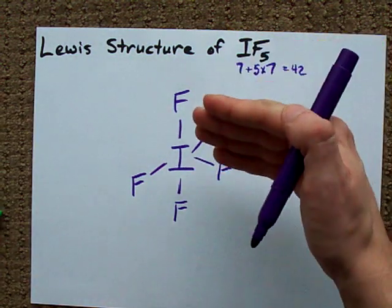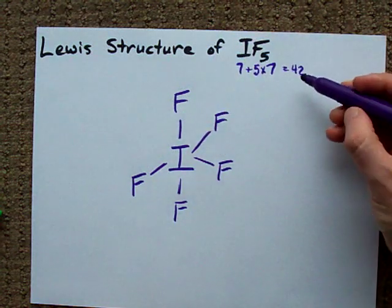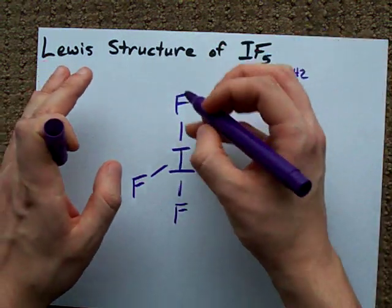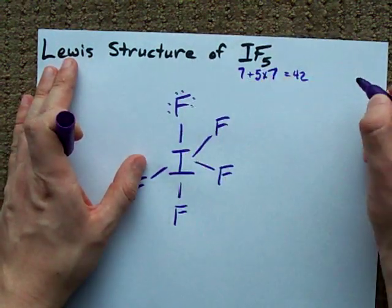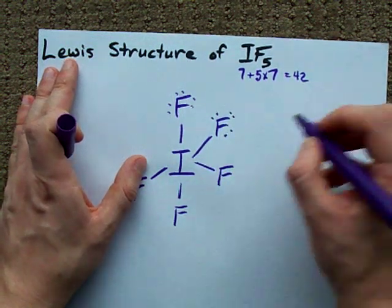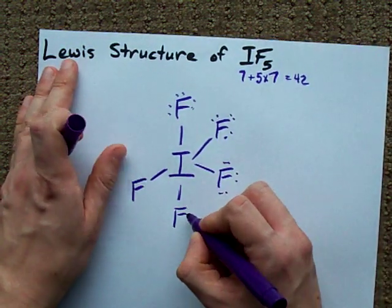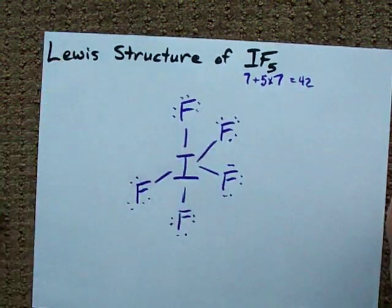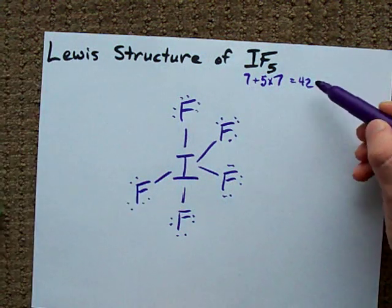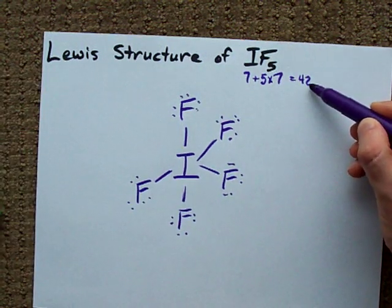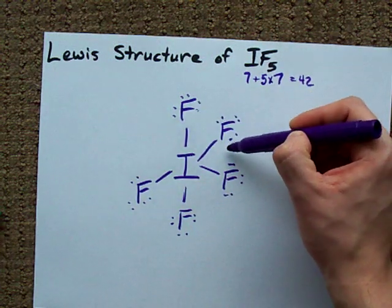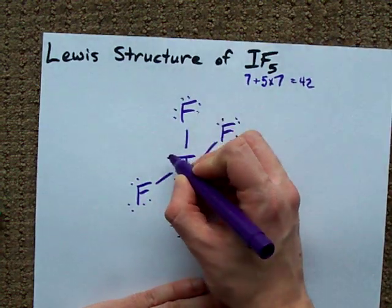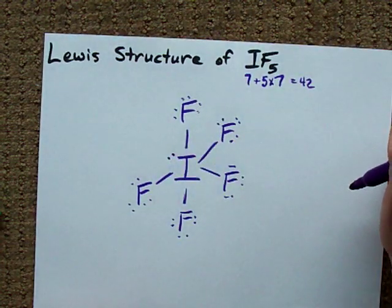Now, fill your outer shells until they have a full octet. I need 42 electrons, so count with me: 2, 4, 6, 8, 10, 12 — continuing up to 40. We still have 2 extra electrons to put in here even though we already have our outer atoms filled. So we have to dump them on the center atom. That's 42 electrons and we're done.